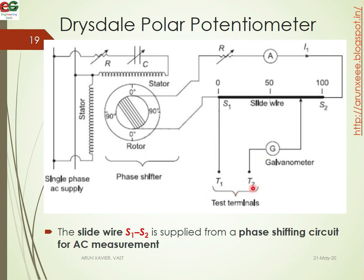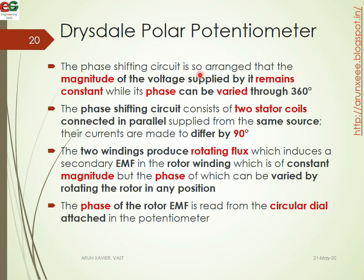The unknown AC voltage values are connected to the input terminals. The slide wire S1 and S2 is supplied from the phase shifting circuit of the AC measurement. The phase shifting circuit keeps the magnitude of the EMF constant while the phase angle can be varied.